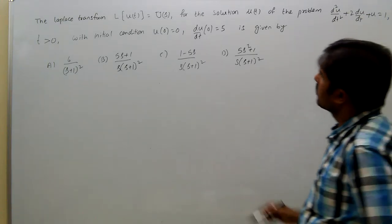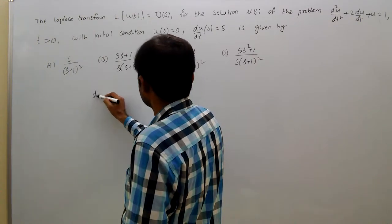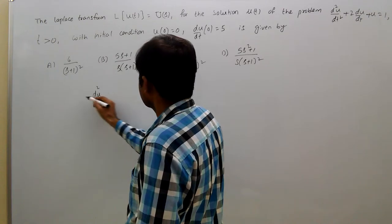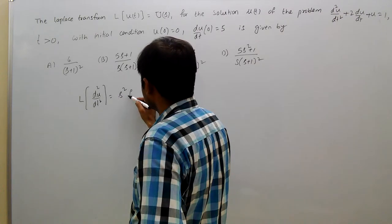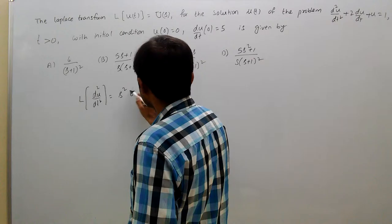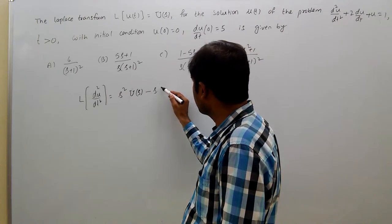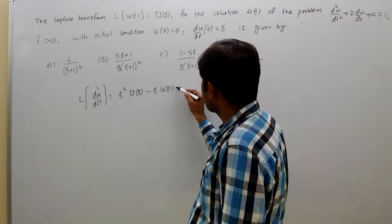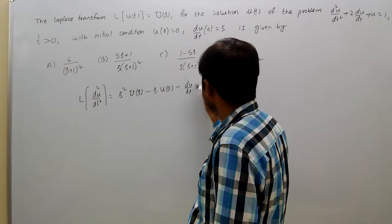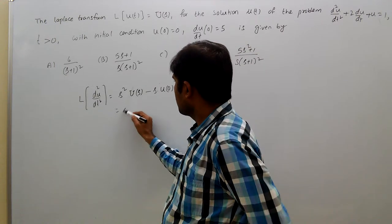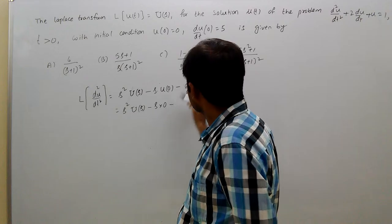Now we know the Laplace transform of u double dash, that means d squared u by dt squared, equals s squared U(s) minus s times u(0) minus u'(0). This equals s squared U(s) minus s times u(0) which is 0, minus u'(0) which is 5.